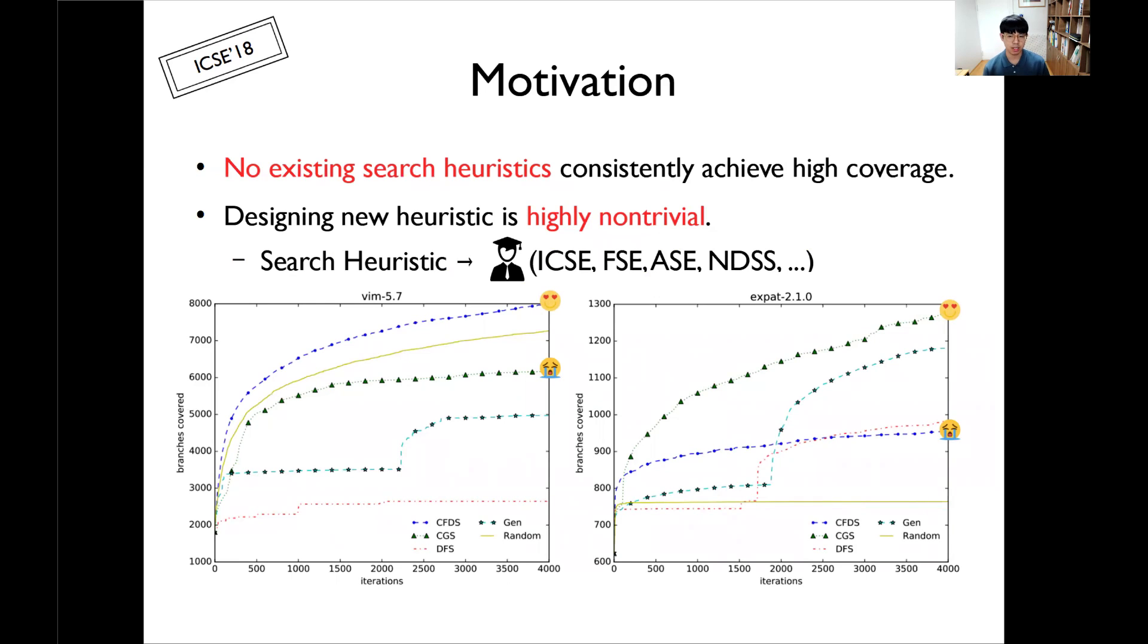Second observation is that manually designing new heuristics is highly non-trivial. I also bring an interesting evidence for the second observation. A single new heuristic can graduate one graduate student. This is a realistic joke because if we succeed in designing a new search heuristic in symbolic execution, you can go to top conferences like ICSE-ASE. That is, manually creating new search heuristic is very difficult, and this new heuristic does not even work well on arbitrary programs. And that is my research motivation from this work.